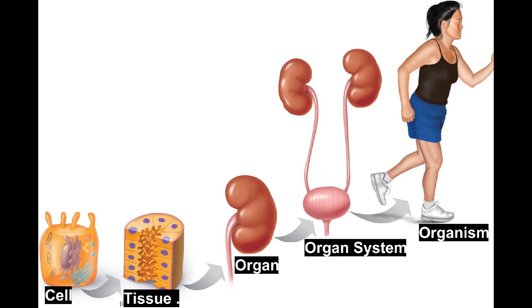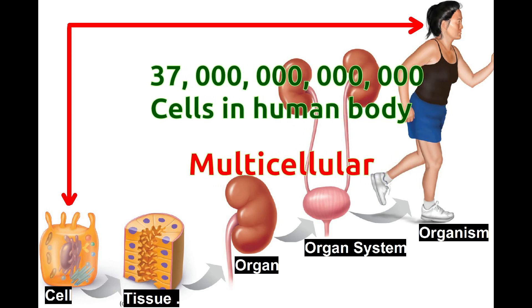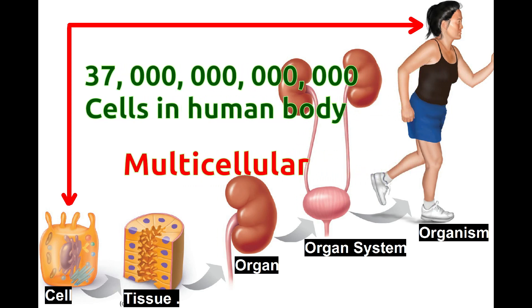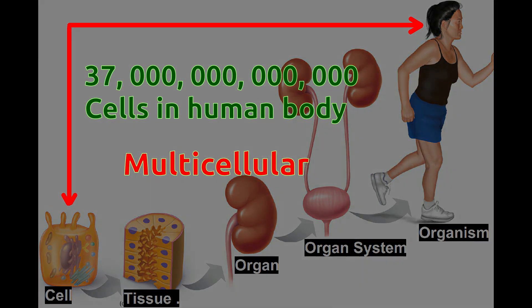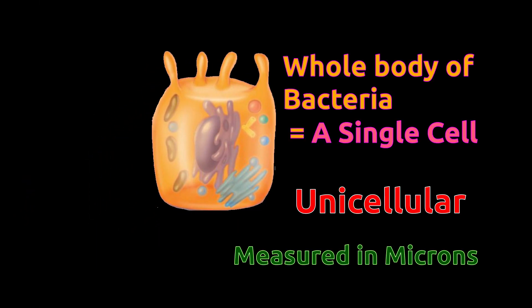We all know that our body is made of tissues and tissues are made of cells. In our body, around 37 trillion cells are there and thus humans are called multicellular. A bacteria's body is made up of a single cell and thus it is called unicellular.